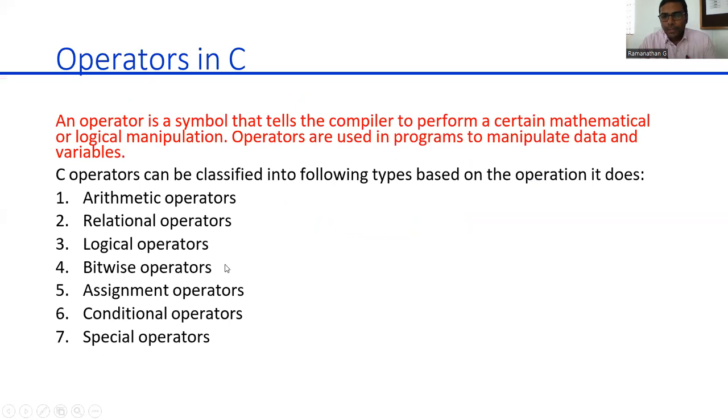Operators in C. First of all, you have to understand what are the different types of scenarios we will be using operators. There are various operators out there, different types of operators. It is common and applicable for all programming languages. The main focus of operators is to tell the compiler to perform a certain mathematical or logical manipulation. Operators are used in programs to manipulate data and variables. We can call it for calculation purposes, for computation purposes. In C program, operators are classified into following types.